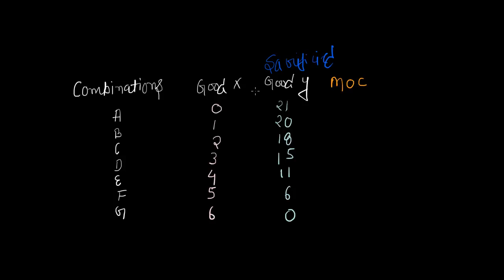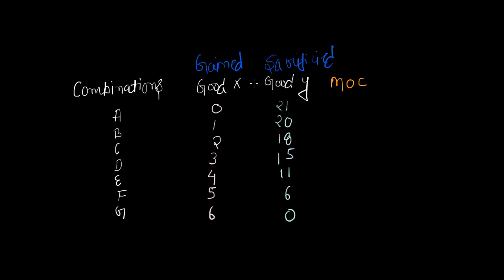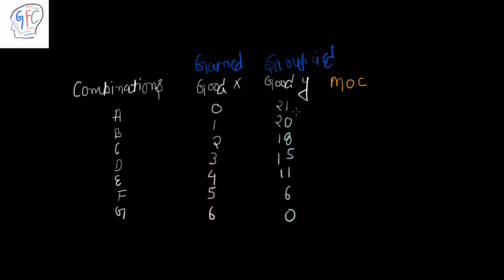Good X is the good which is being gained. Now let us apply the formula to calculate marginal opportunity cost: units of one good sacrificed divided by units of the other good obtained. Good X is being gained and Y is being sacrificed. For combination A, with X = 0 and Y = 21, nothing has been added or deducted, so we leave combination A blank.